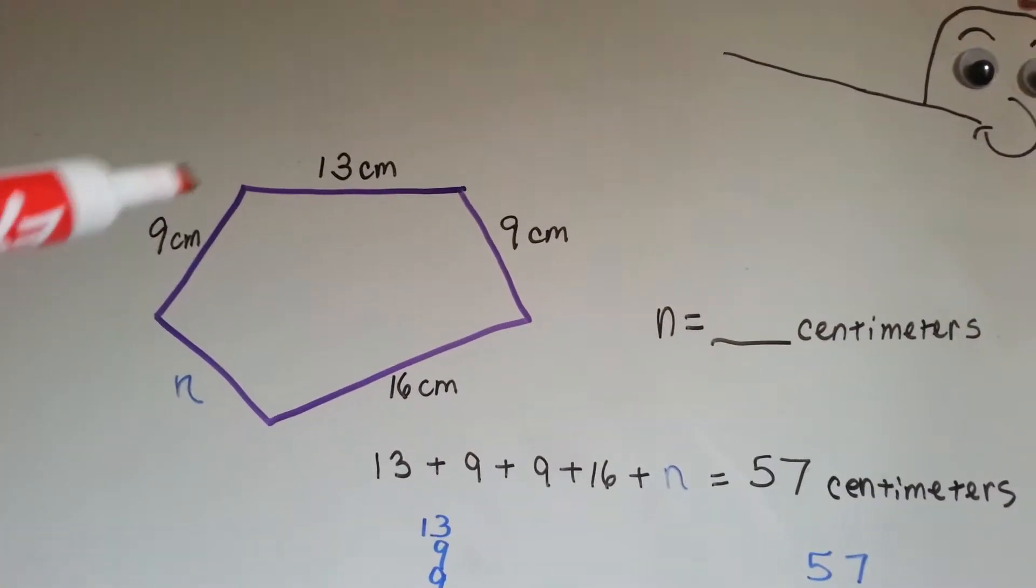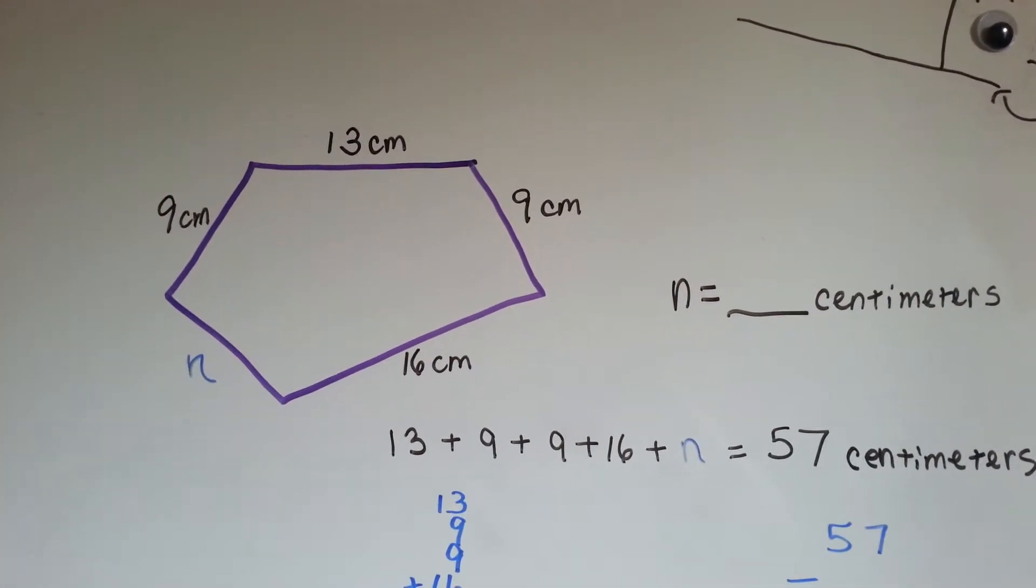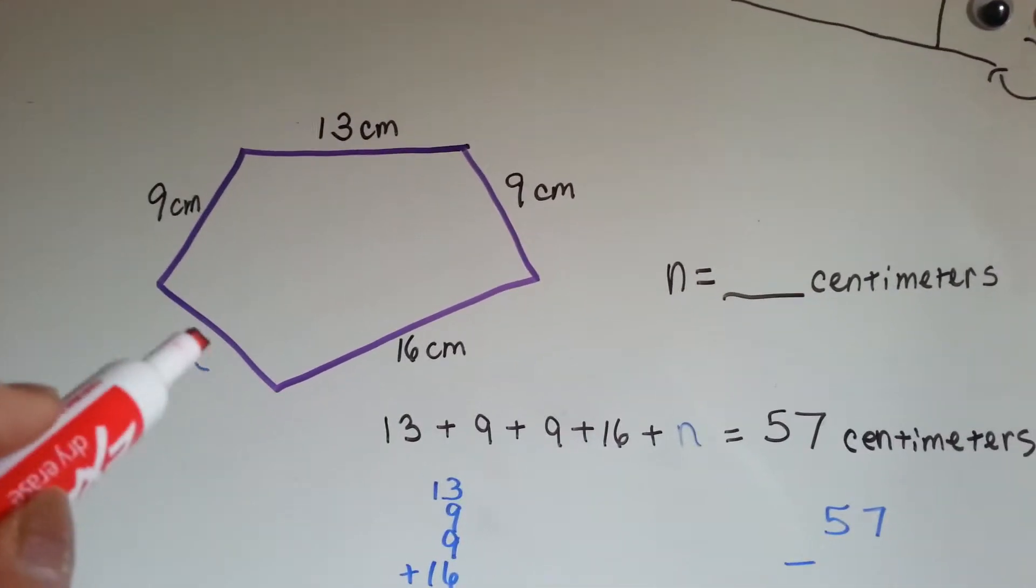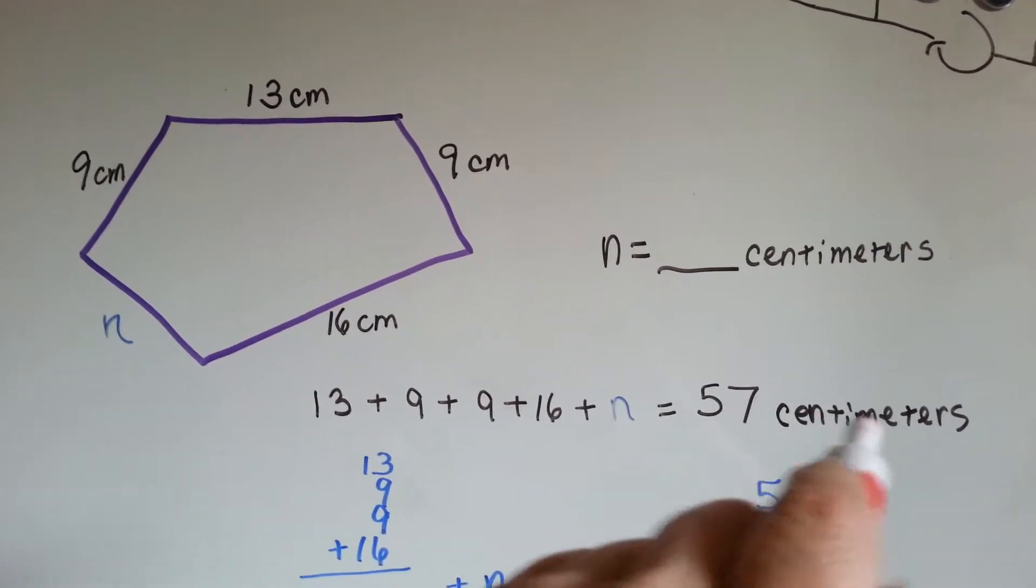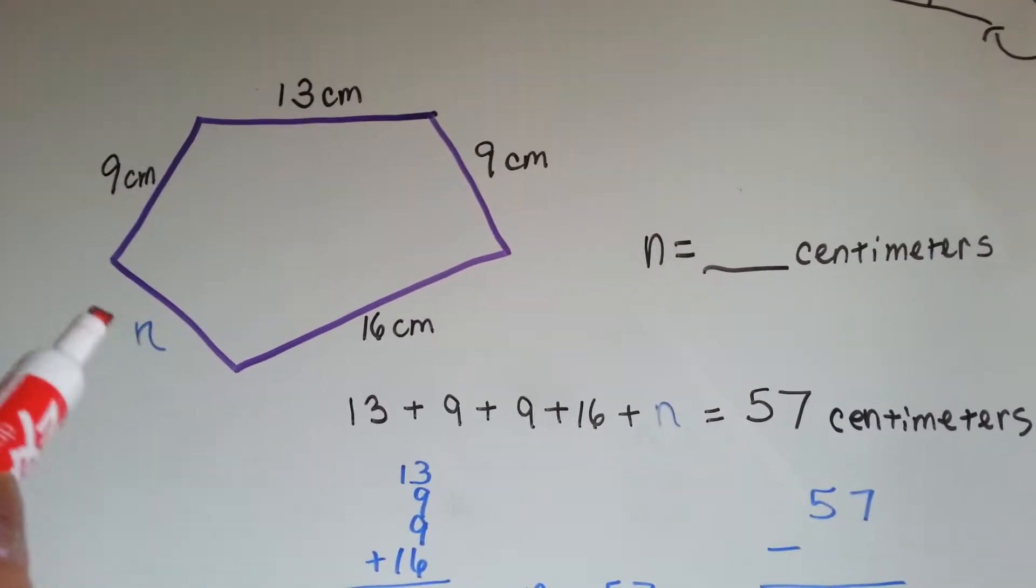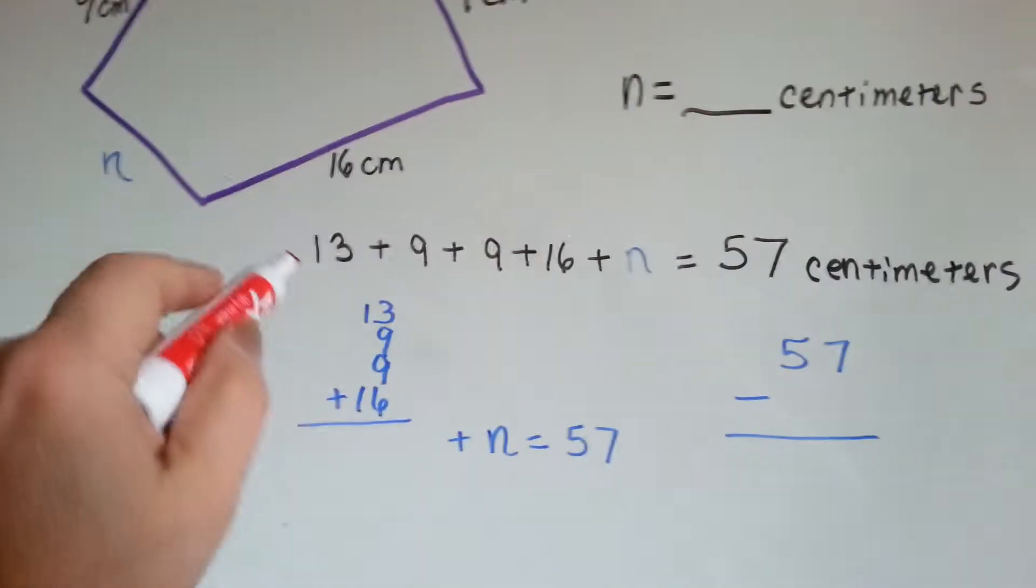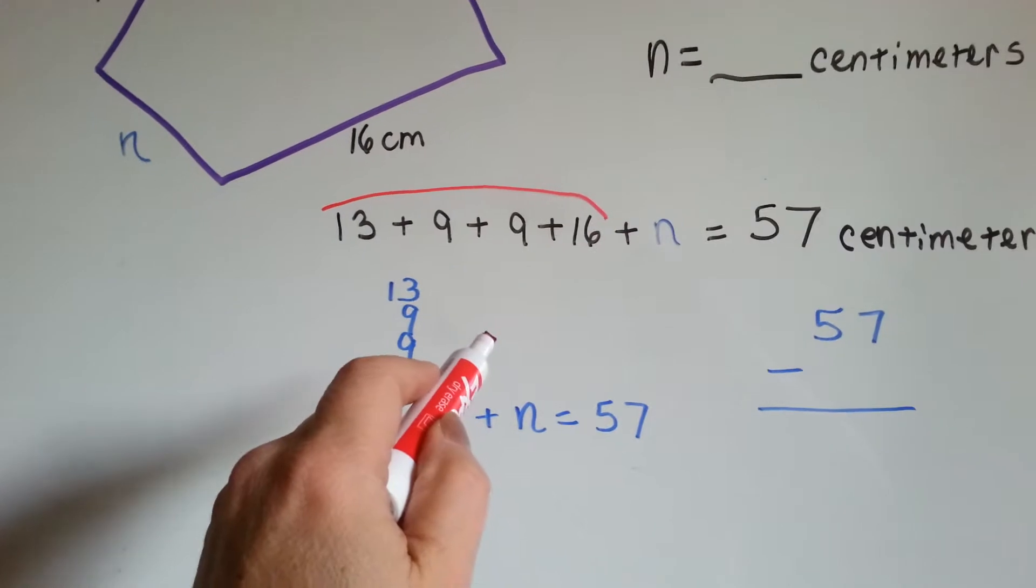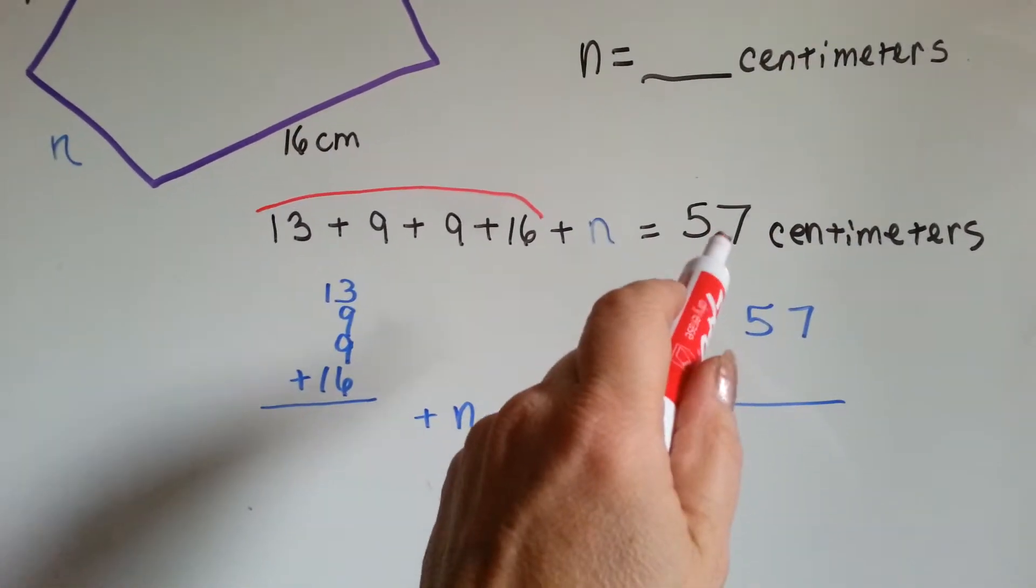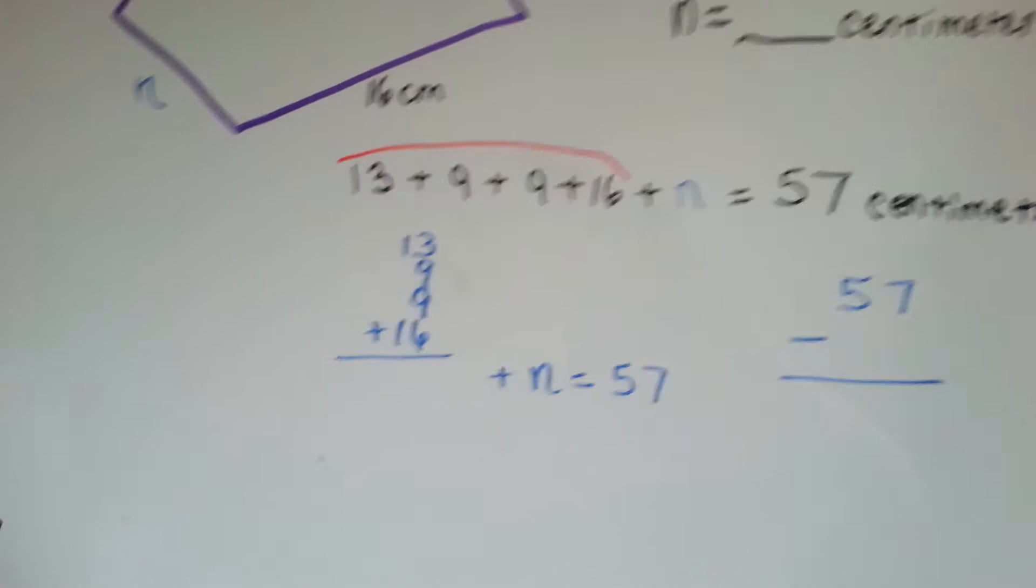Okay, let's do this one. This is 9 cm, 13 cm, 9 cm, and 16 cm. We don't know what this side is, but we know the whole thing is 57 cm. So we need to figure out what n is. So what we're going to do is we're going to add all of these together, subtract it from the 57, and that'll tell us what's left over for the n.